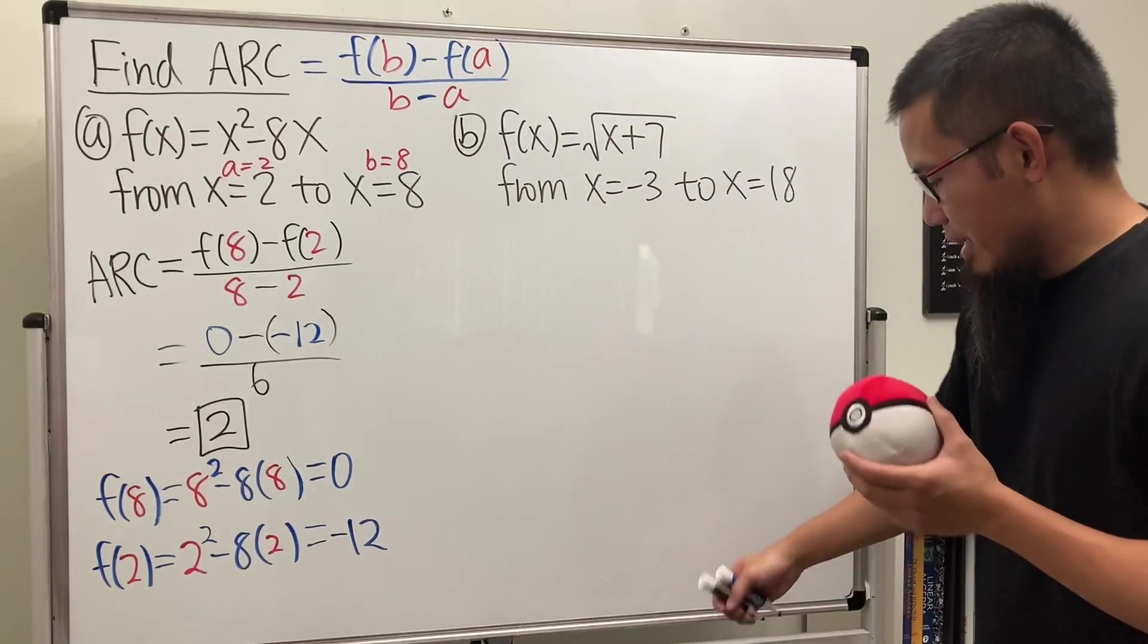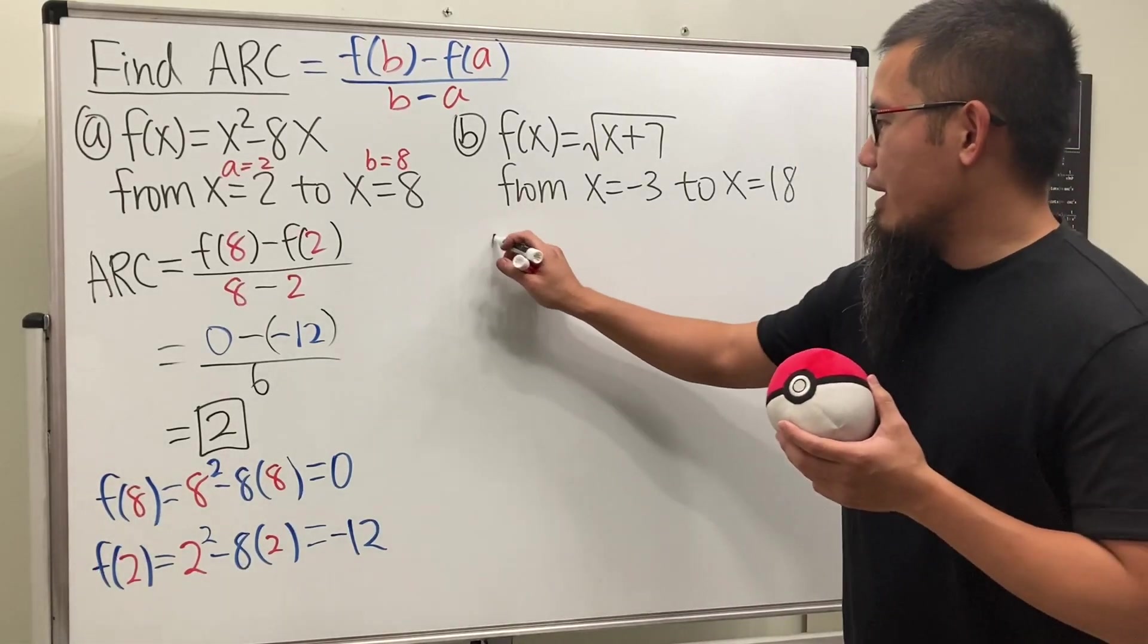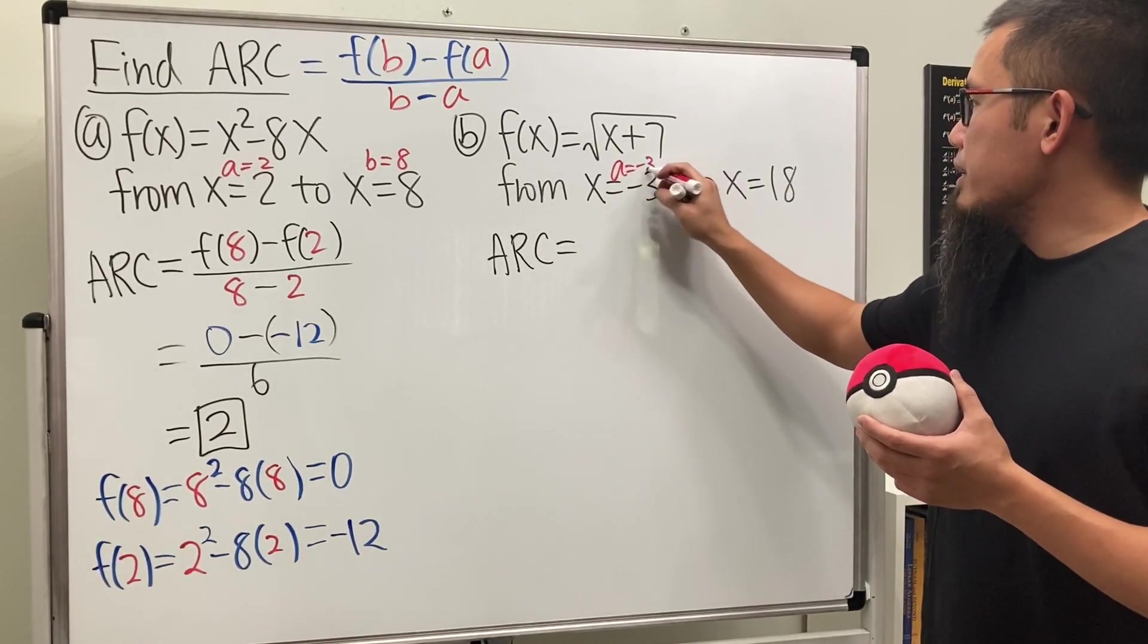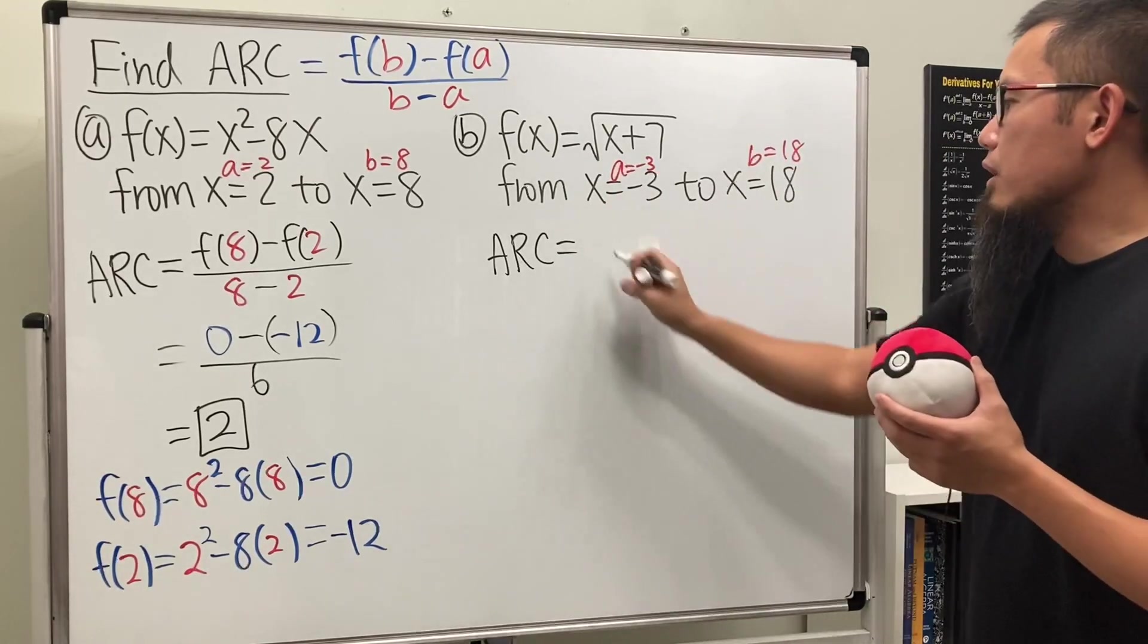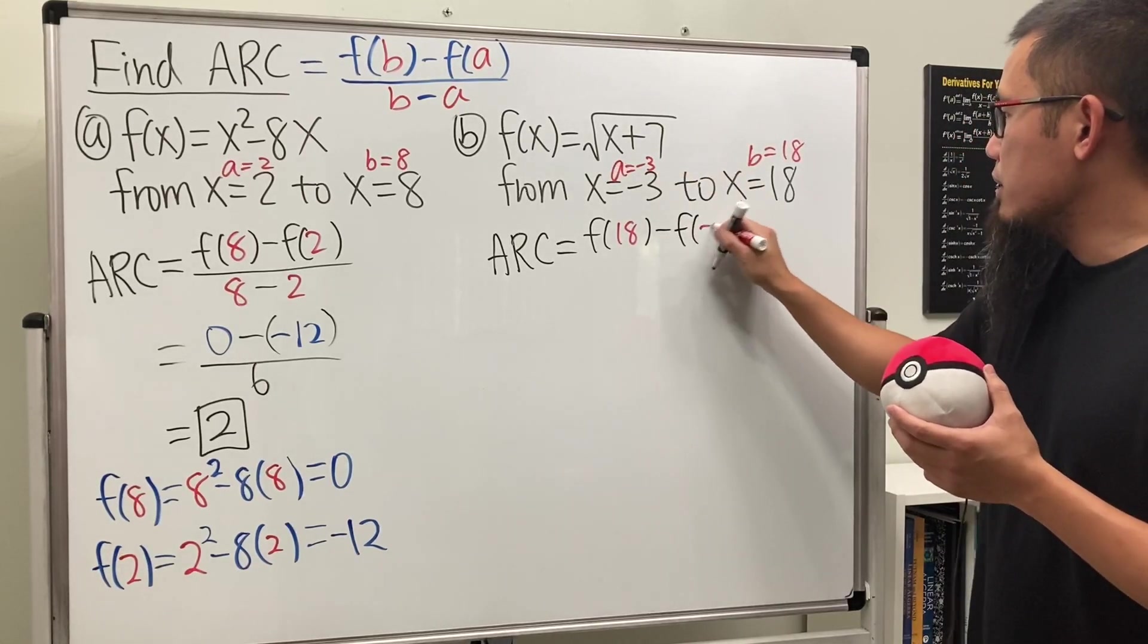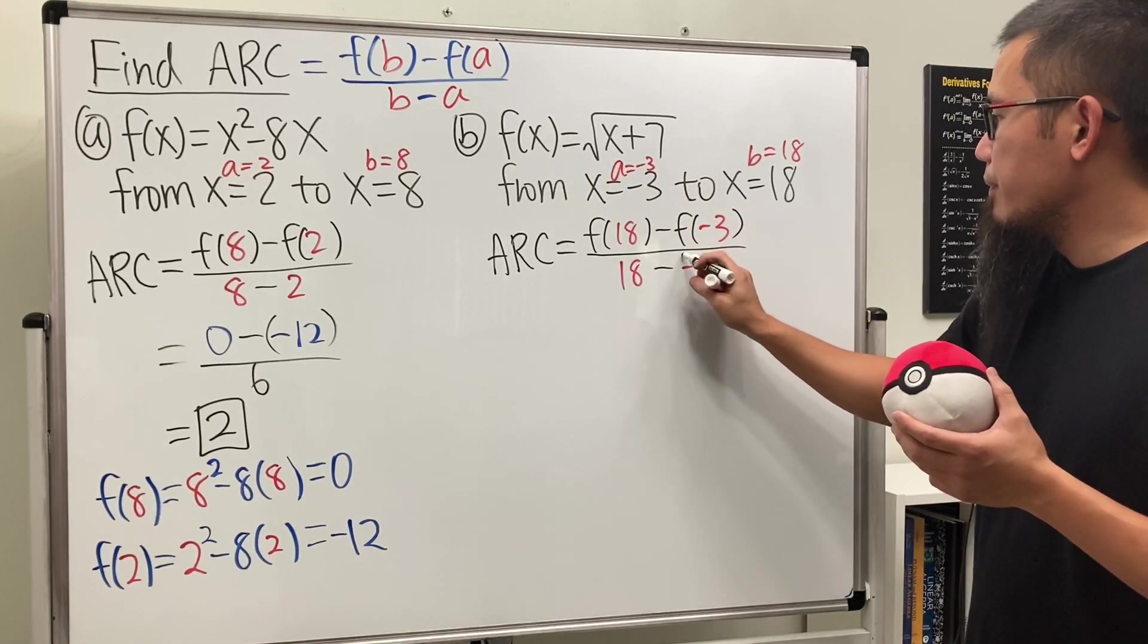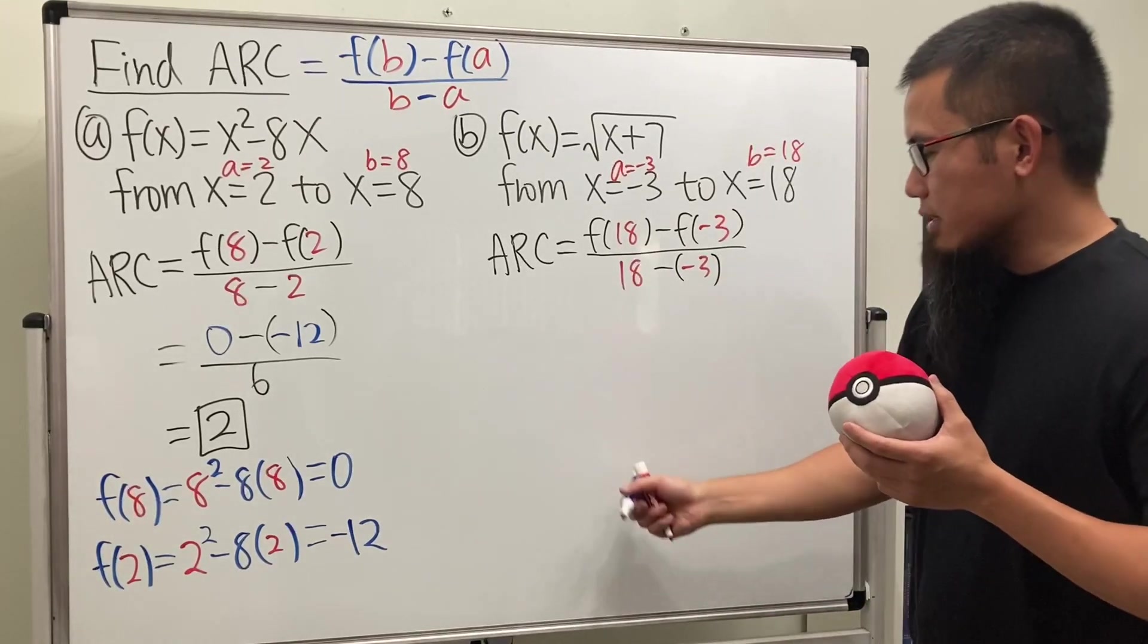We are done. The average rate of change is just 2. Now for this one, we just have to do the same thing. Average rate of change: in this case a is negative 3 and b is positive 18. Again, just plug in. So we get f of 18 minus f of negative 3 and then over 18 minus negative 3.